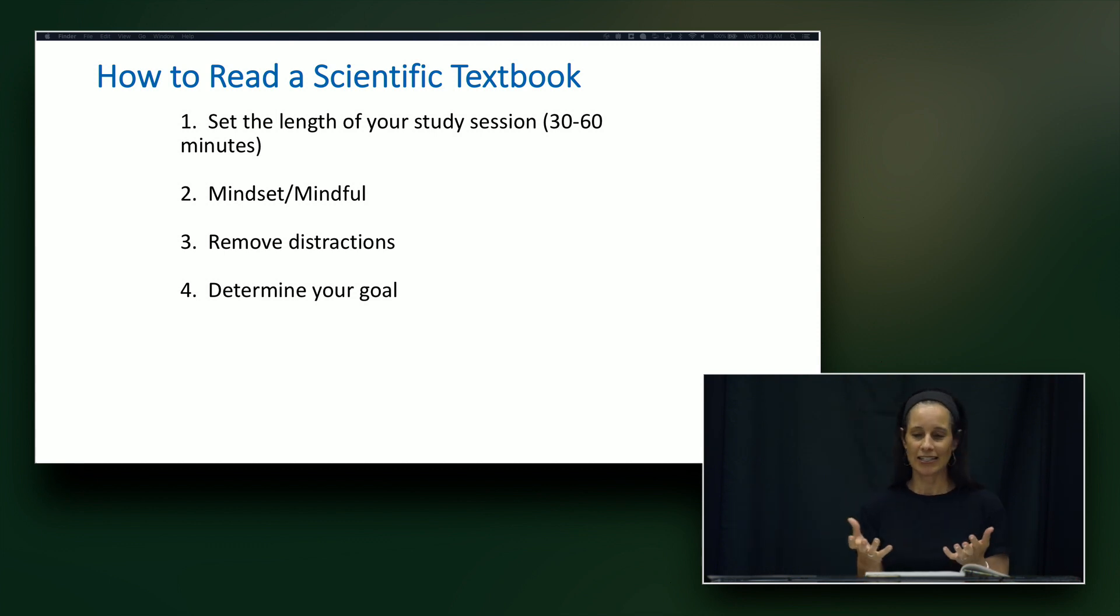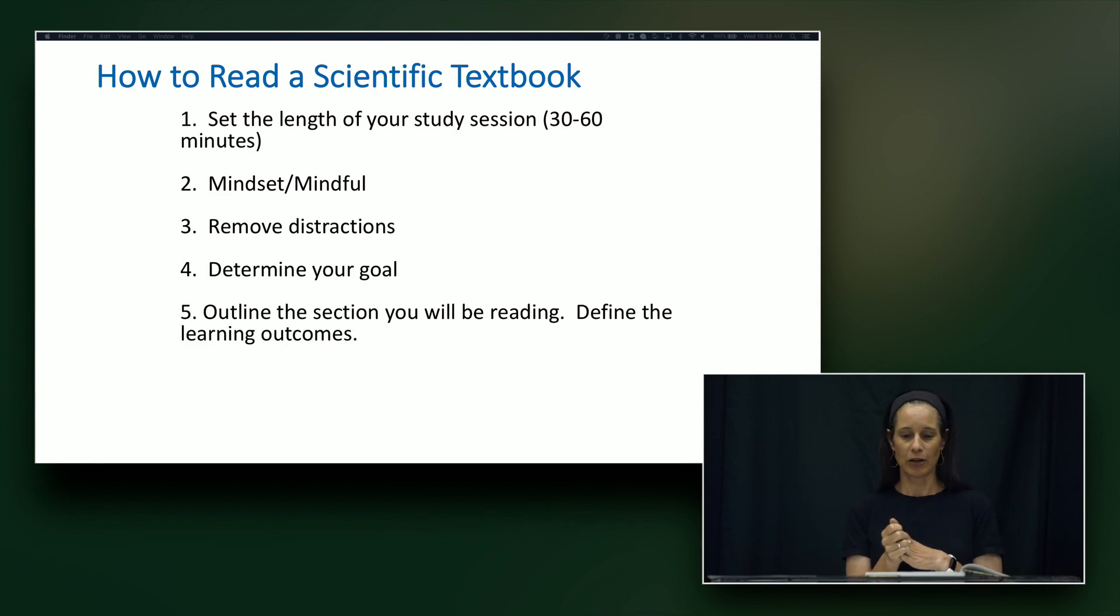So the next step I recommend is to set a timer and this is called the Pomodoro method. I literally will pull out my phone and set it for 25 minutes. My kids even do this, we call it our 25-5 plan. So you will study for 25 minutes and then you take a five minute break. If your studies are going really well and you're learning a lot of information, then I would recommend going ahead and setting it for 50 minutes and then taking a 10 minute break at the end of that.